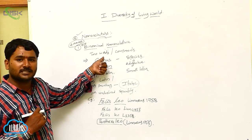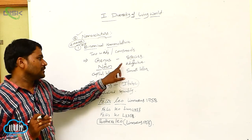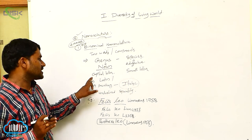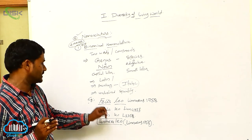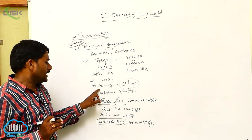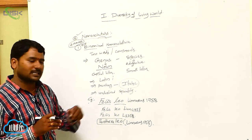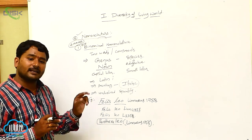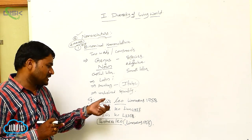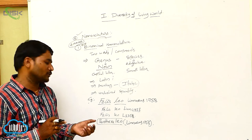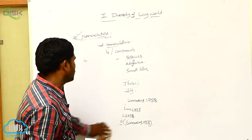In binomial nomenclature, two words are present in a scientific name: the first name is the genus and the second is the species. Genus is a noun; species is an adjective. Genus starts with a capital letter; species starts with a small letter — for example, Leo is written with a small letter. The scientific name must be in Latin language. When printing, it must be in italic type; when typing, we type in italic type and underline the genus and species separately. We can write the taxonomist's name after the scientific name, and the year of discovery after the scientist's name. If the genus name is changed, the original proposing scientist's name can be written in brackets or parentheses.